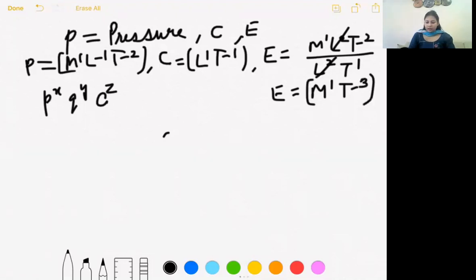If this step is clear to you. Ye wala step clear hai. Bacche deekh lo. Kabya ye step clear hai aapko? Chalik hai.